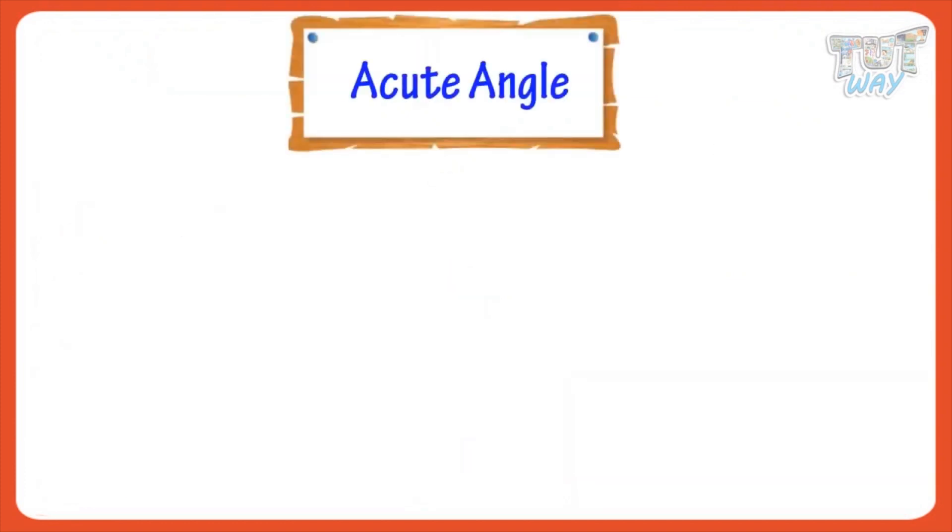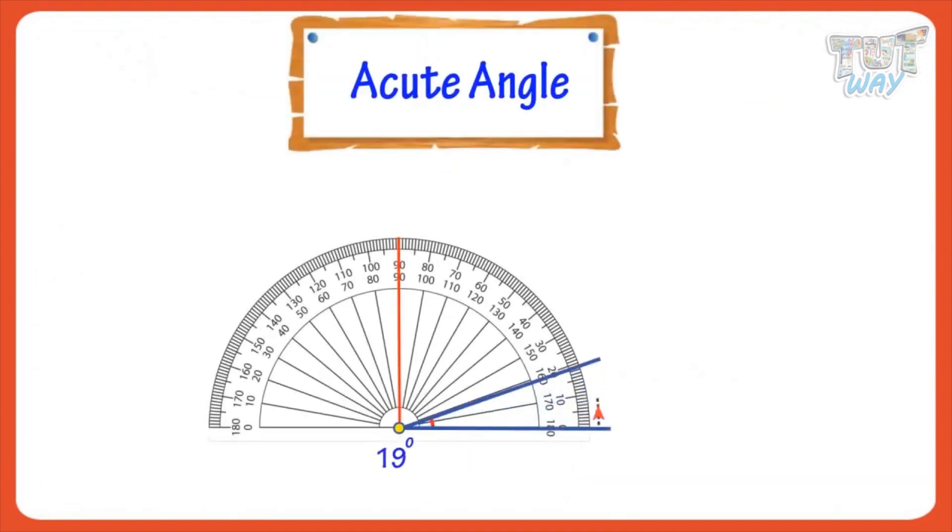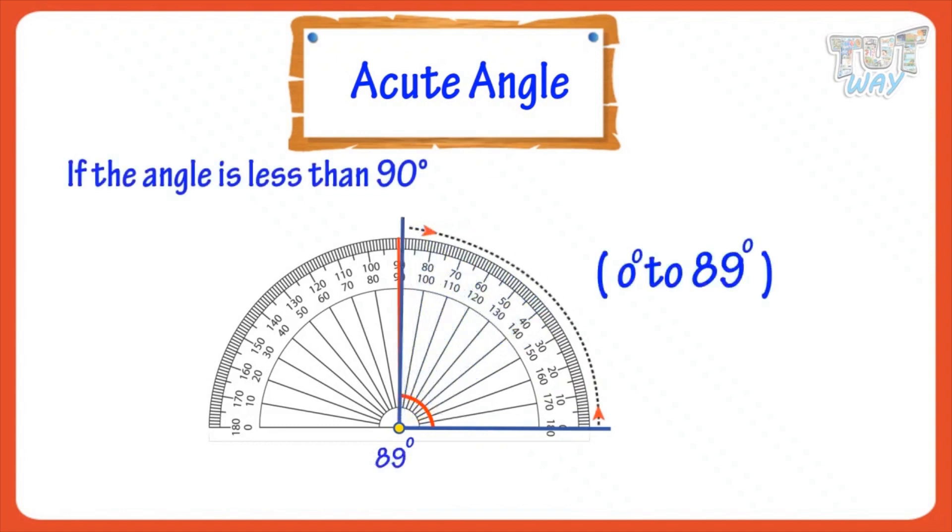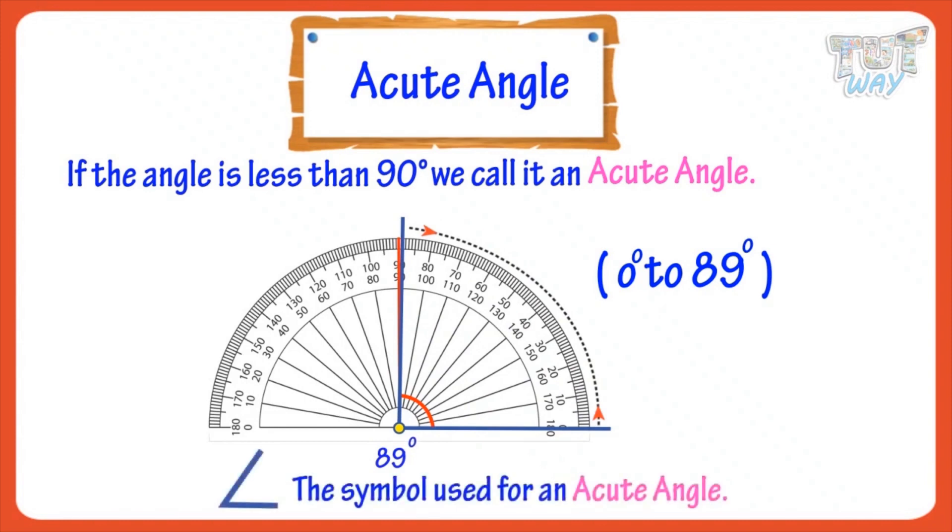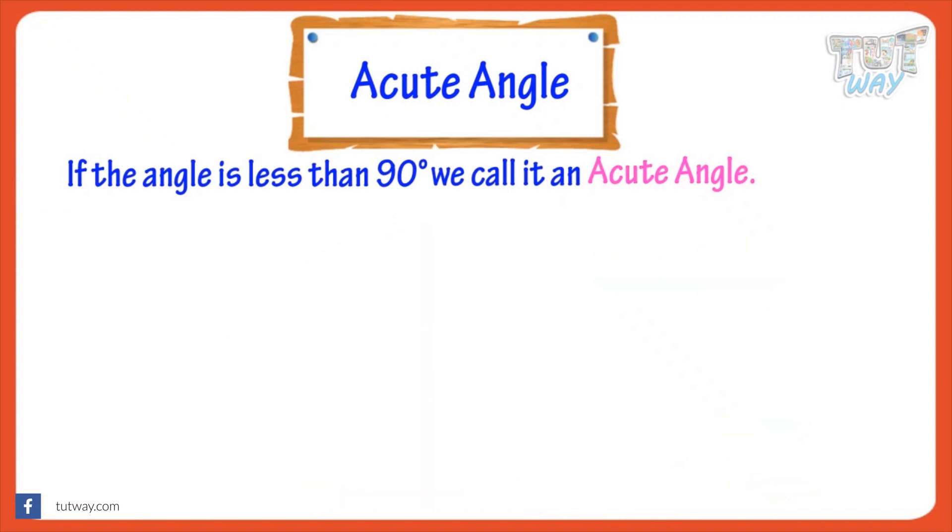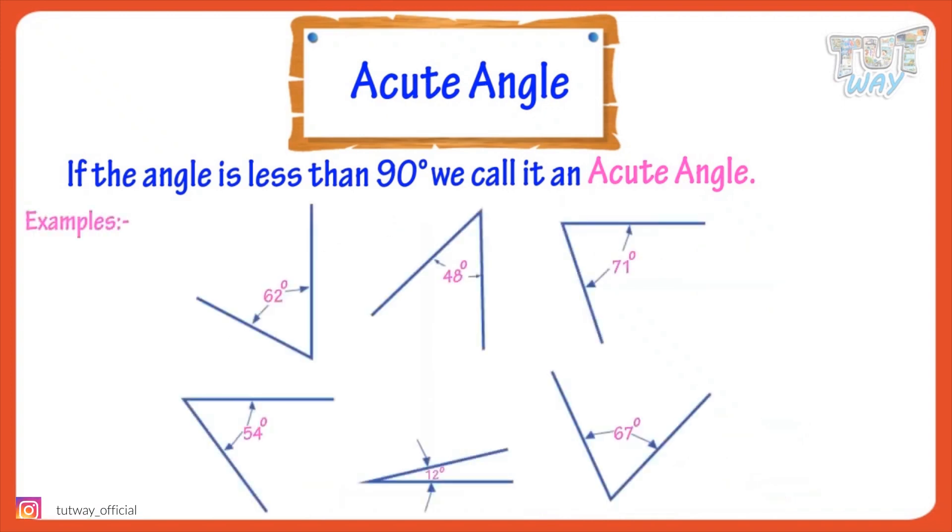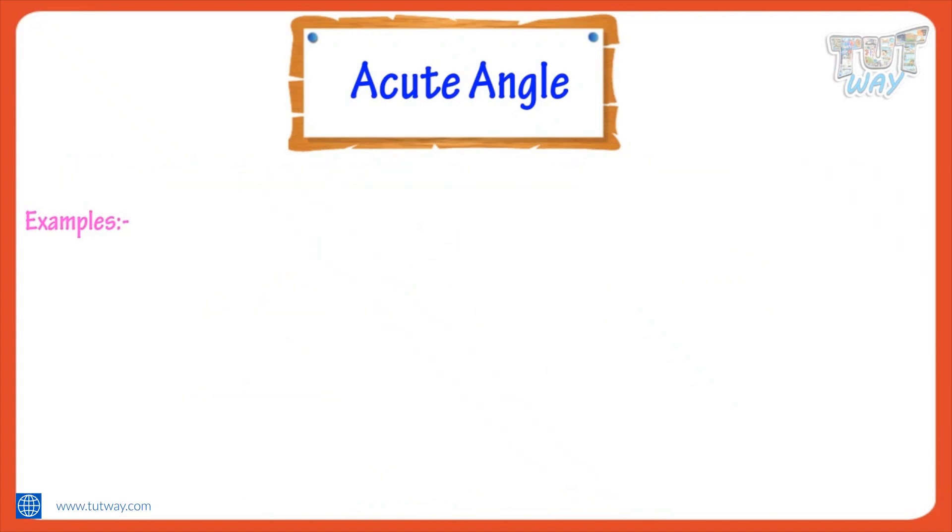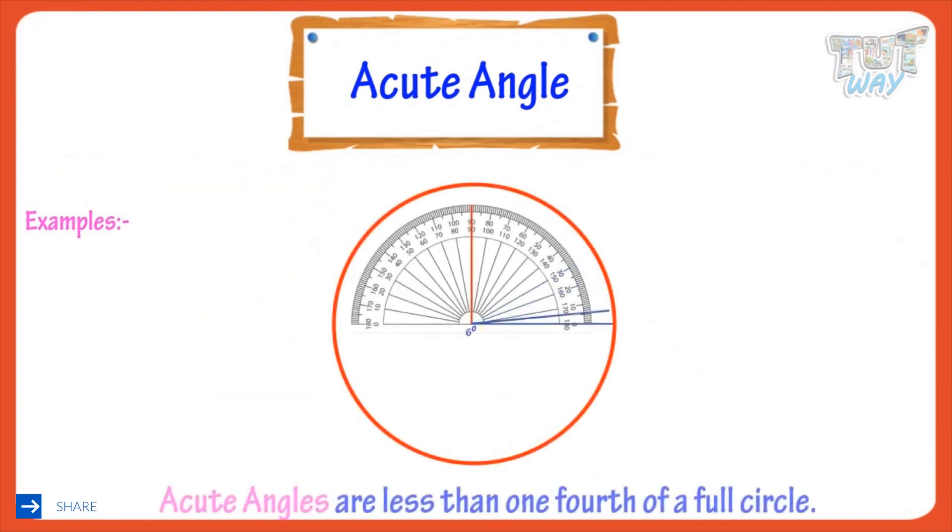Acute angle: If the angle is less than 90 degrees, we call it an acute angle. This is the symbol we use for an acute angle. We write acute angles like this. Now, let's see some examples of acute angles. So kids, acute angles are less than one-fourth of a full circle.